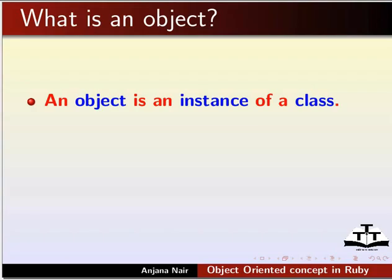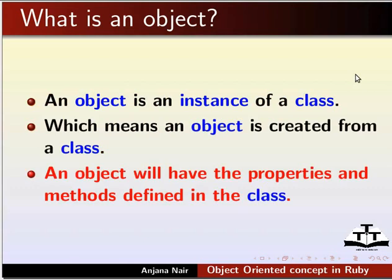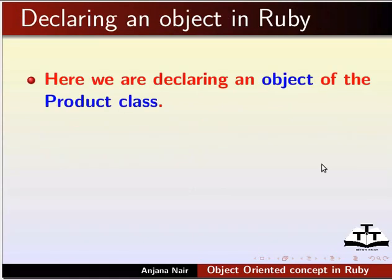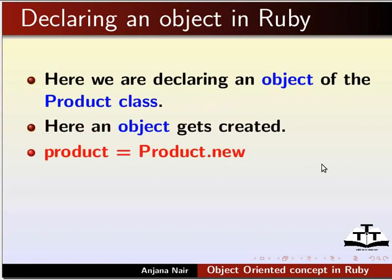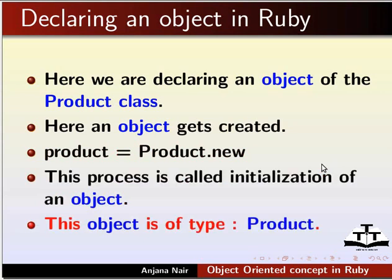Next, let us look at what an object is. An object is an instance of a class, which means an object is created from a class. An object will have the properties and methods defined in the class. We declare an object of a class using the new keyword. Here, we are declaring an object of the Product class: product = Product.new. This process is called initialization of an object; the object is of type Product.